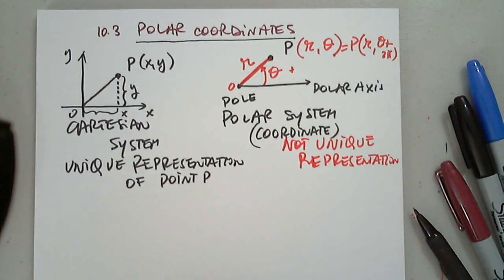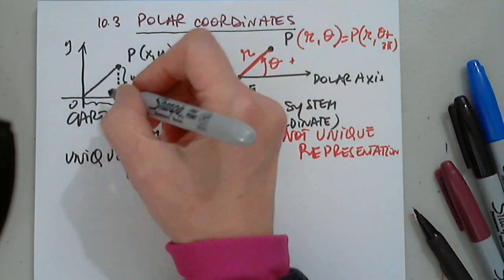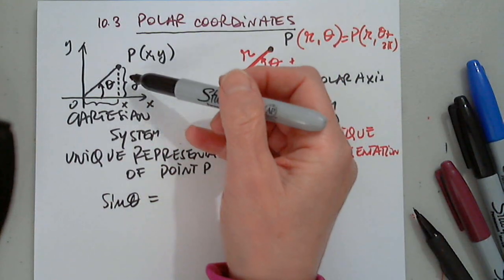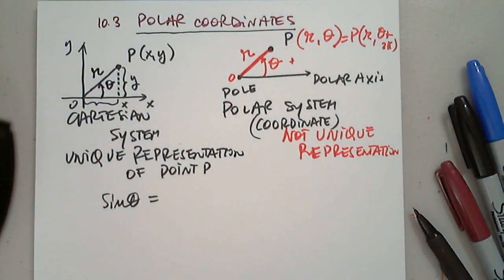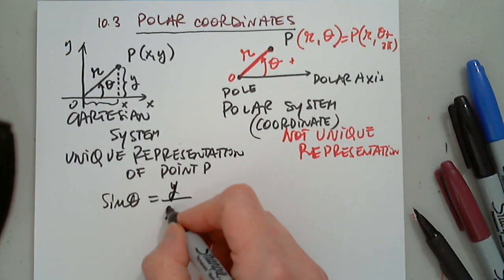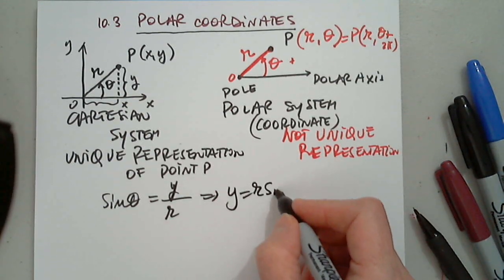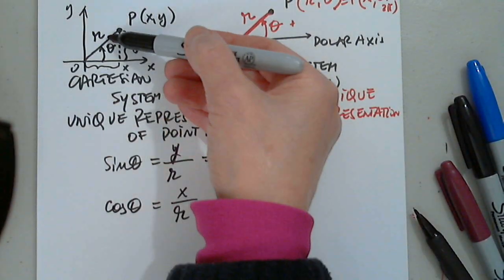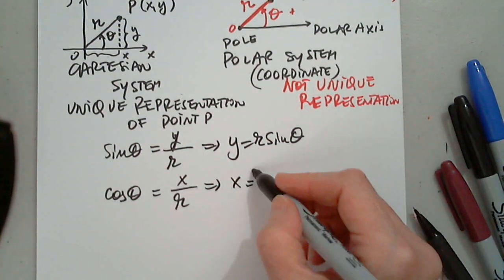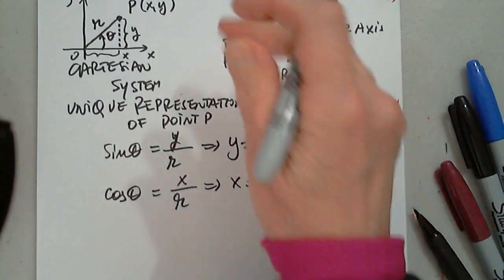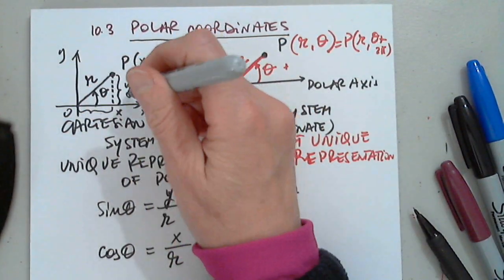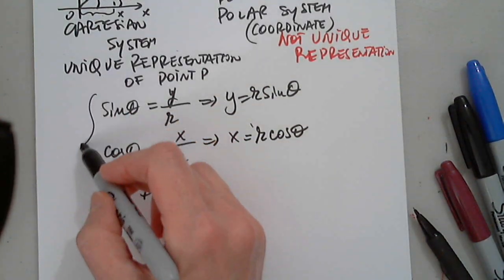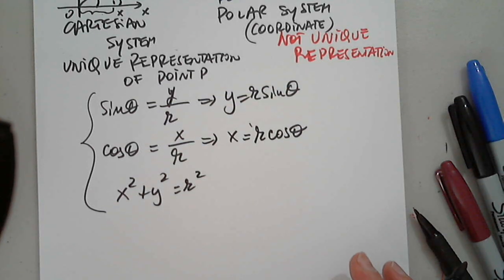Now let's establish the relationship between polar and Cartesian coordinates. Sine θ equals the opposite leg over the hypotenuse, so sin θ = y/r, giving us y = r sin θ. For cosine θ, we have x/r, giving x = r cos θ. And from the Pythagorean theorem, x² + y² = r². These are all the necessary equations we will be using.